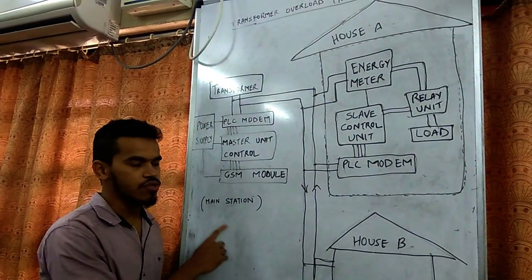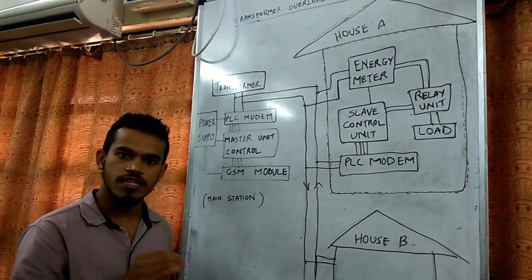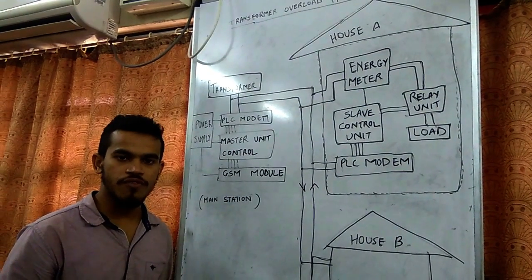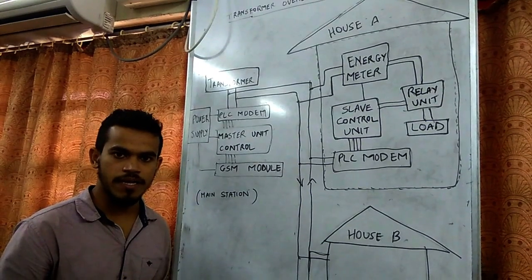It will send a message to the user saying to slow down the usage of power. You will be getting three messages. The third message will be the last and final message.